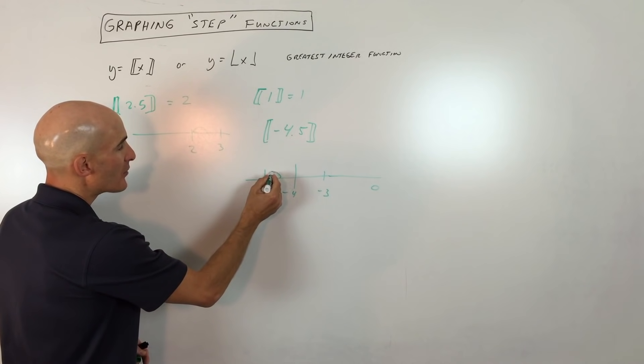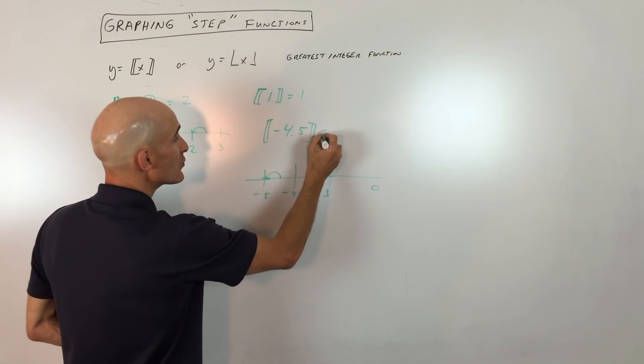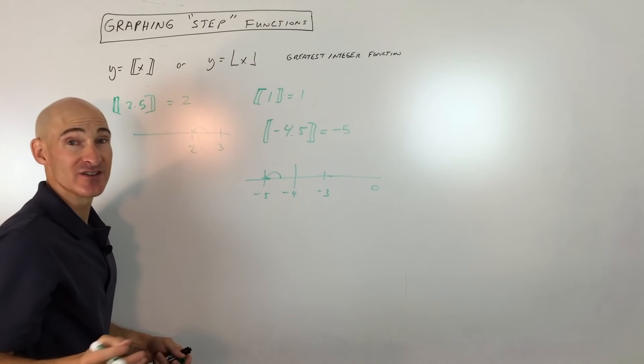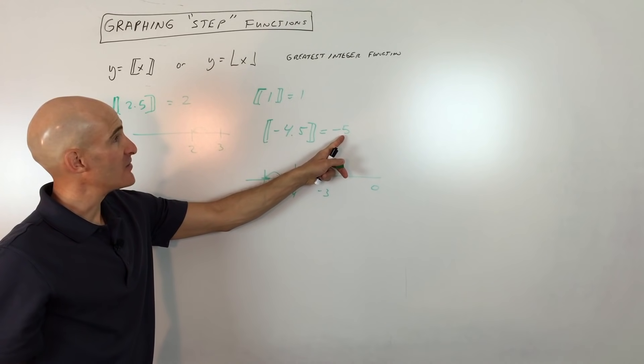So negative 4.5 is right about here. But notice we're rounding down, rounding down, we're rounding to the left. So you always round to the left on the number line. So this is actually negative 5.